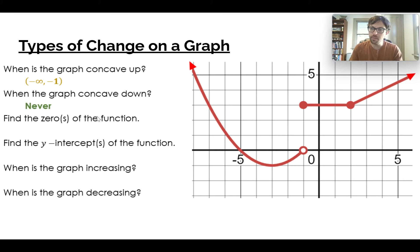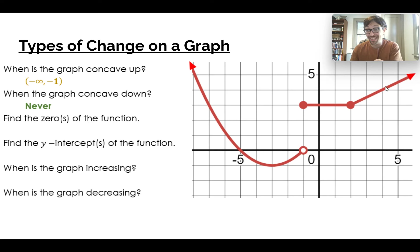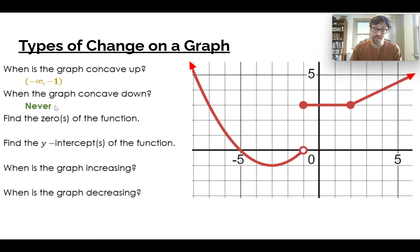Where we're going to be concave down is never — I don't see any areas with that concave down shape, like a cup of water pouring out. So all of this is concave up. There's never a point where we are concave down — we're not guaranteed both concave down and concave up.